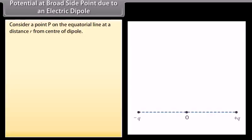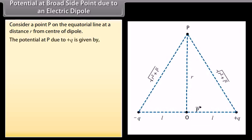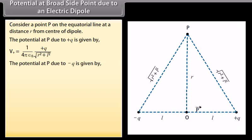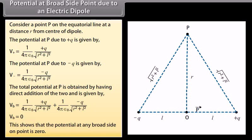Potential at broadside point due to an electric dipole. Consider a point P on the equatorial line at a distance R from the center of the dipole. The potential at P due to plus Q is V_positive equals 1 upon 4π ε₀ multiplied by Q upon √(R² + L²). The potential at P due to minus Q is V_negative equals 1 upon 4π ε₀ multiplied by minus Q upon √(R² + L²). The total potential V_B equals 0, showing that the potential at any broadside-on point is zero.